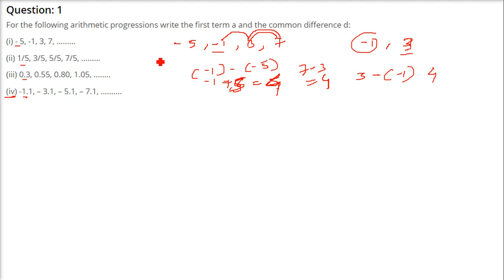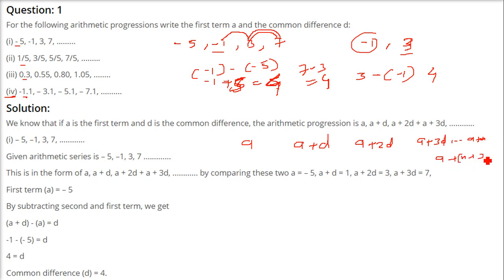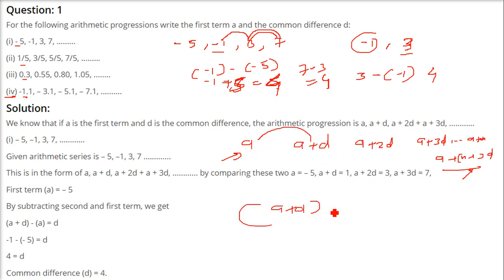The general form of an AP is: A, A+D, A+2D, A+3D, and so on up to A+(N-1)D, which is the Nth term. The first term is always A. Subtracting consecutive terms: (A+D) minus A gives D, confirming the common difference.